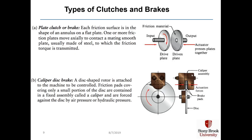There are different types of clutches and brakes. In a plate clutch, each friction surface is in the shape of an annulus on a flat plate, and one or more friction plates move axially to contact a mating smooth plate, usually made of steel, to which the friction torque is transmitted. An actuator presses the two plates together. The drive plate is on the input side and the driven plate with its friction material is on the output side; when pressed together, torque is transmitted from the input shaft to the output shaft.